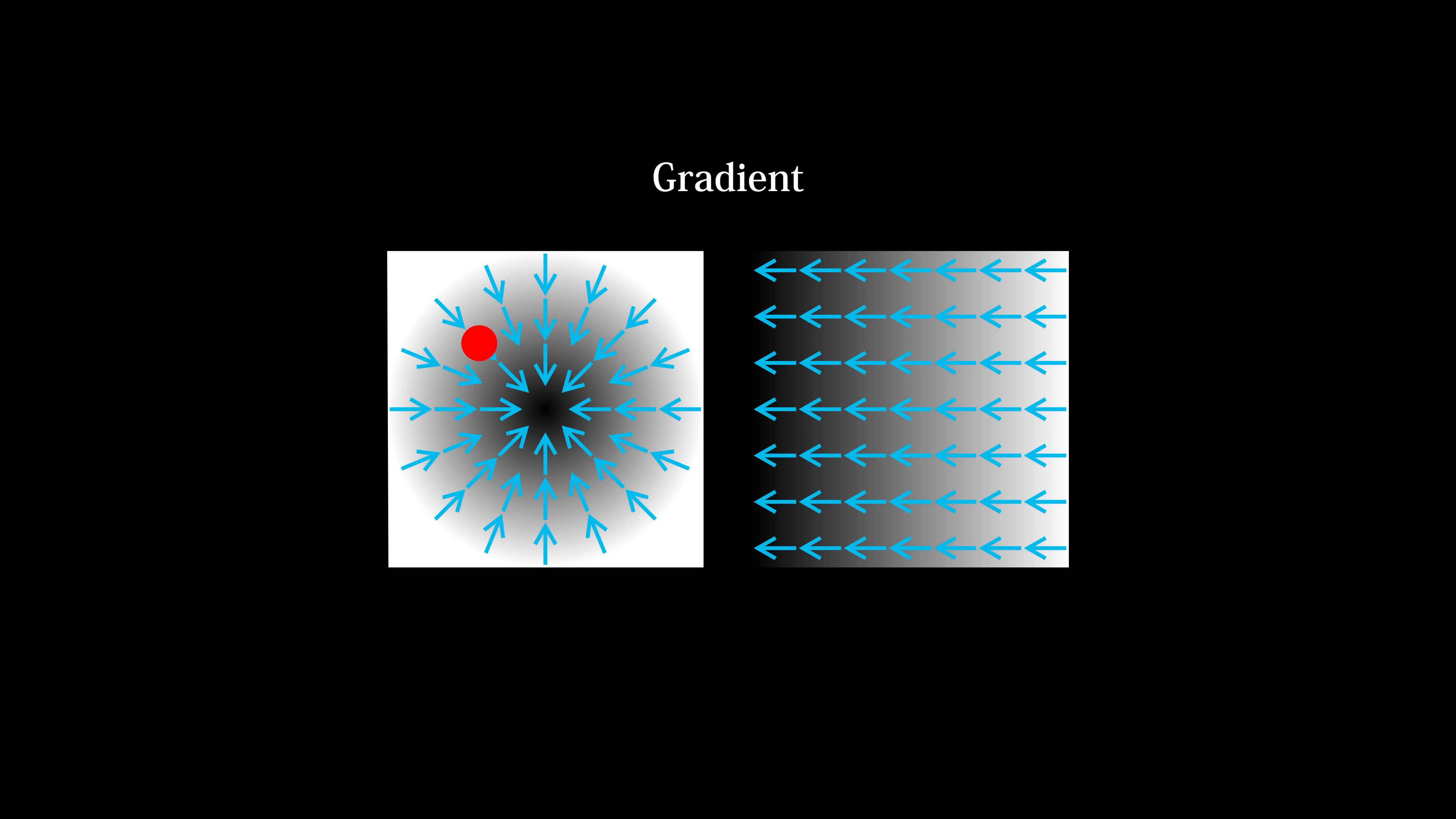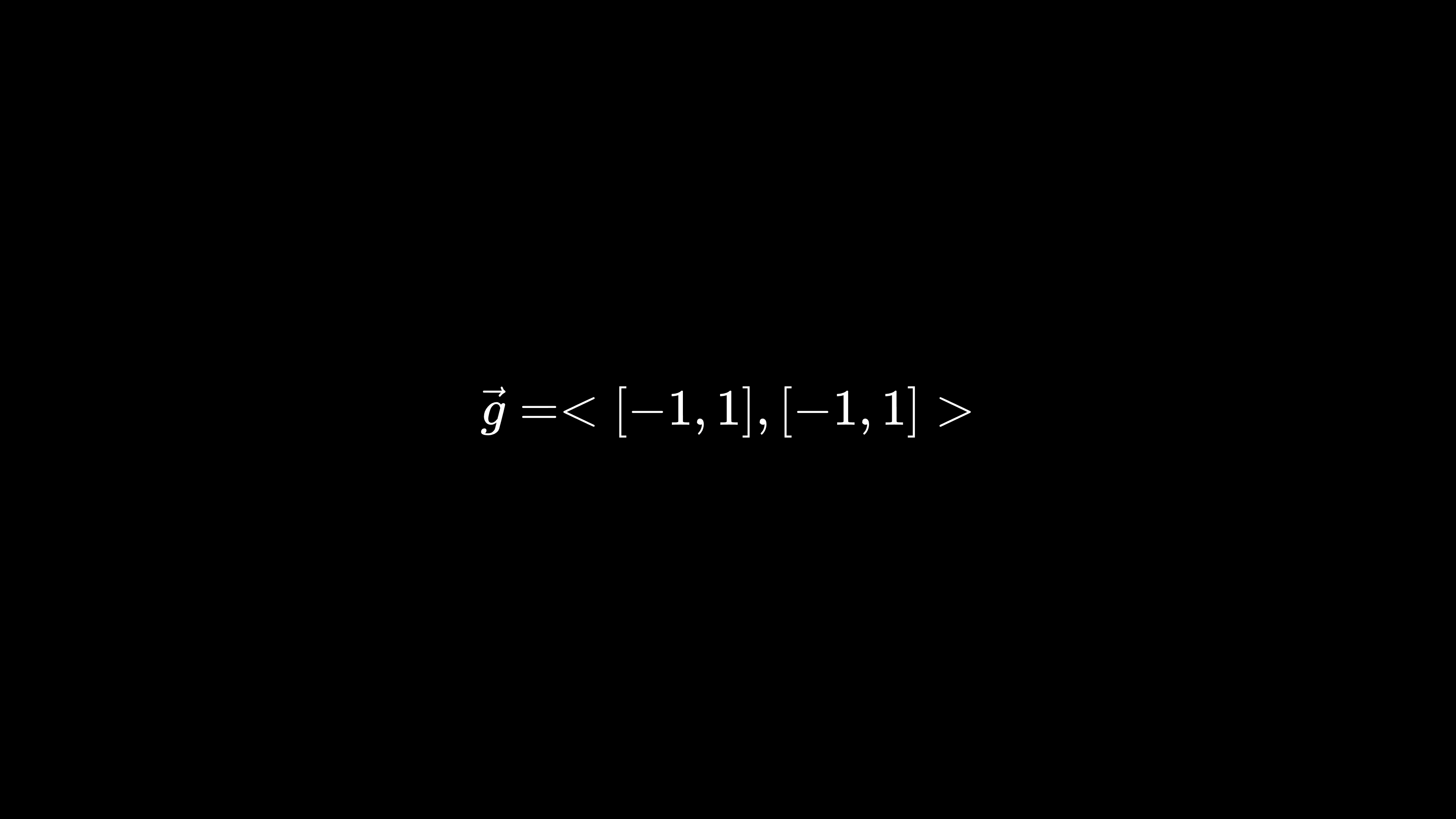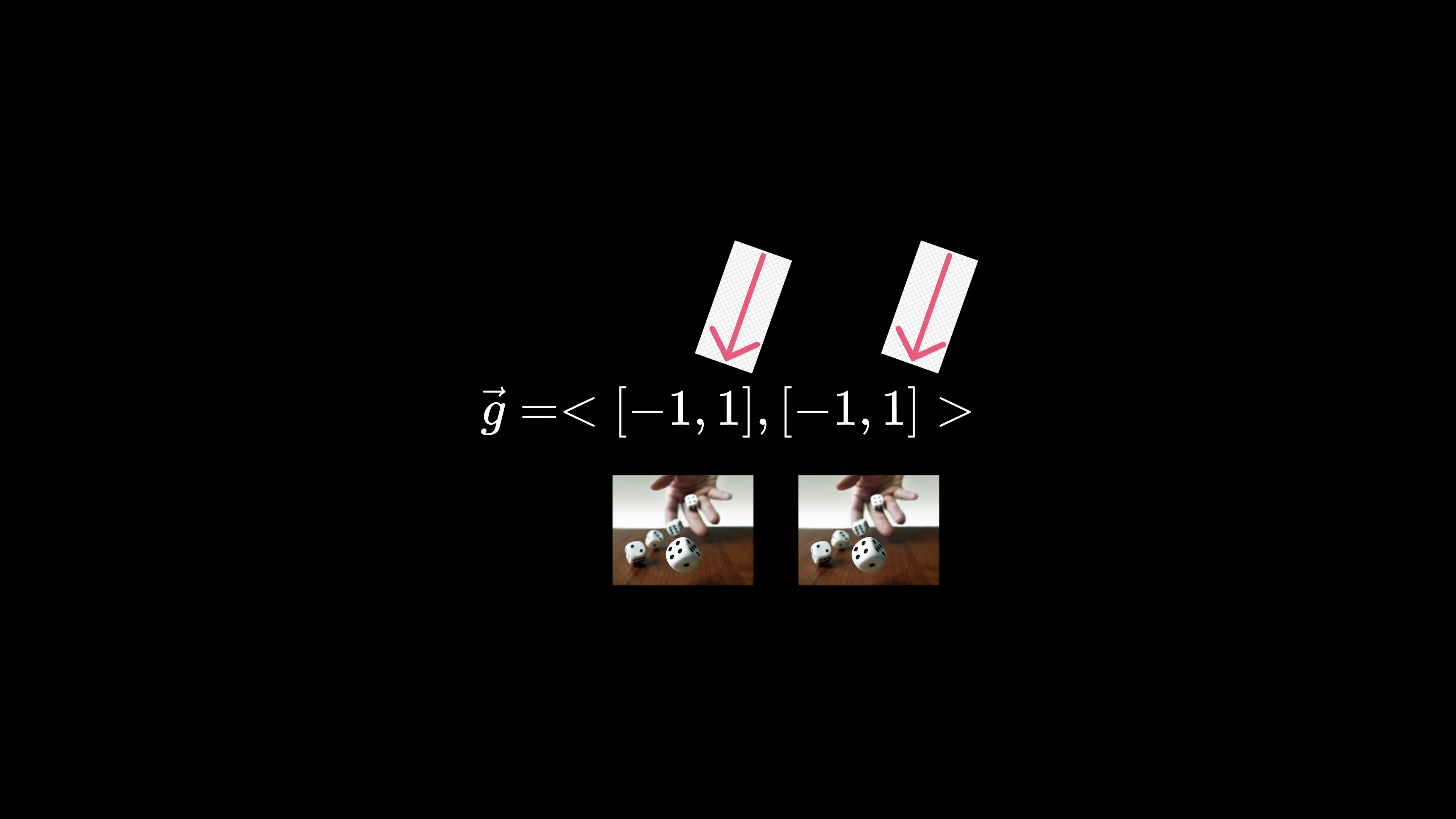Our perlin noise implementation begins with assigning a random gradient vector to each point on our lattice grid. This is a two-component vector with each component ranging from negative 1 to 1.